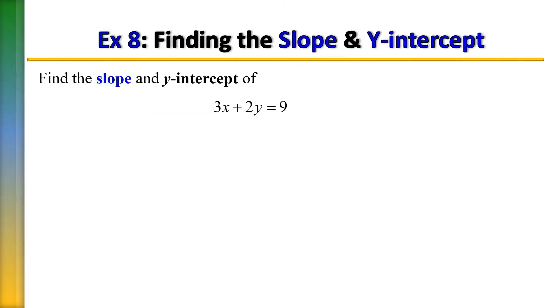In this example, we are given the equation 3x plus 2y equals 9 and asked to find the slope and the y-intercept. Now we are given this equation in standard form. Recall that you should not read the slope and y-intercept when the line is in standard form. You need to rewrite the line into slope-intercept form.